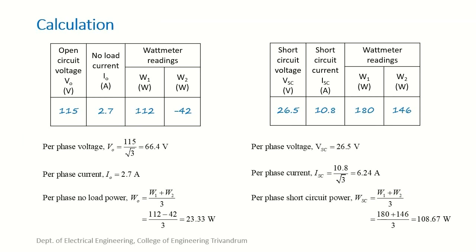Now the summary of calculations. We have two sets of readings from the open circuit test and short circuit test, and all calculations are done on a per-phase basis. For the secondary side (star connected), the per-phase voltage is 115/√3, and the phase current equals the line current. The per-phase power is total power divided by 3. Since one wattmeter reading is minus 42, the minus sign is applied, giving a no-load power of 23.33 watts per phase.